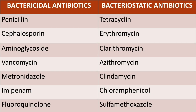Now let's see examples. Bactericidal agents include penicillin, cephalosporin, aminoglycosides, vancomycin, metronidazole, imipenem, and fluoroquinolones. Bacteriostatic antibiotics include tetracycline, erythromycin, clarithromycin, azithromycin, clindamycin, chloramphenicol, and sulfamethoxazole. Most cell wall synthesis inhibitors fall under bactericidal agents, while tetracyclines, macrolides, chloramphenicol, and sulfonamides fall under bacteriostatic agents. Please study this table thoroughly as multiple choice questions can come from this portion.